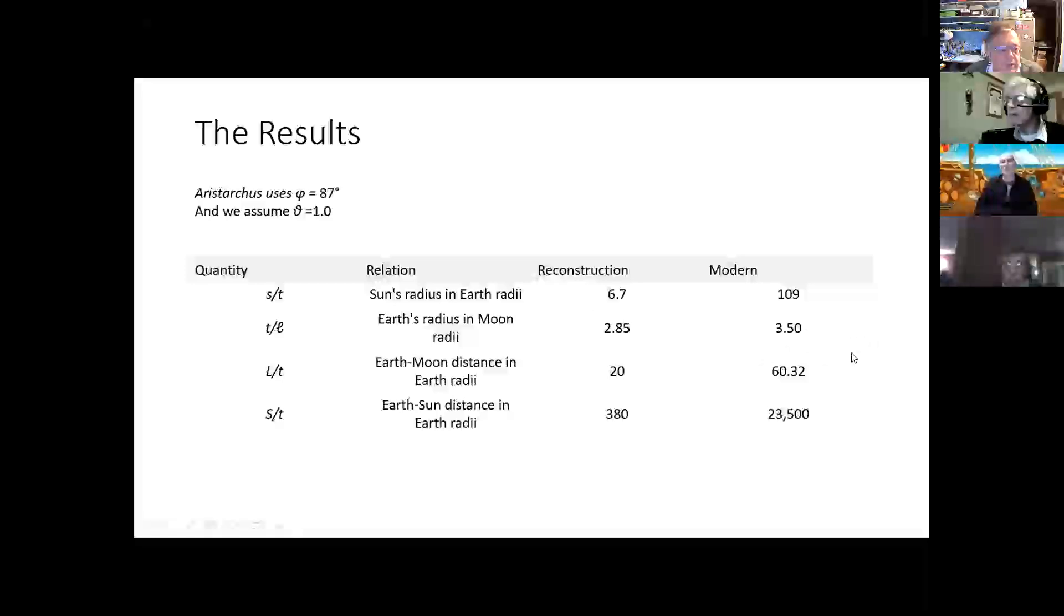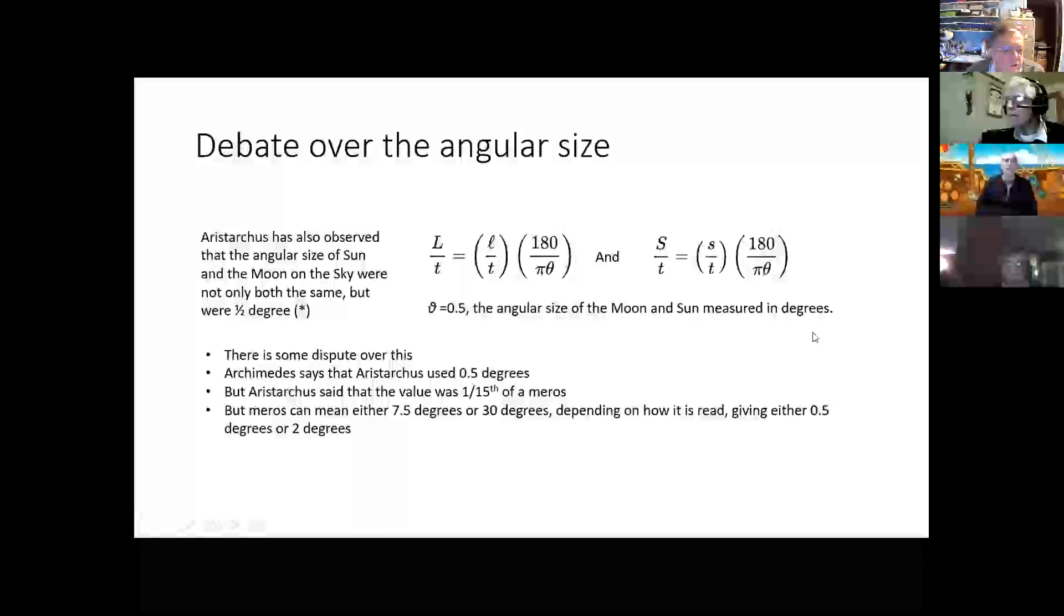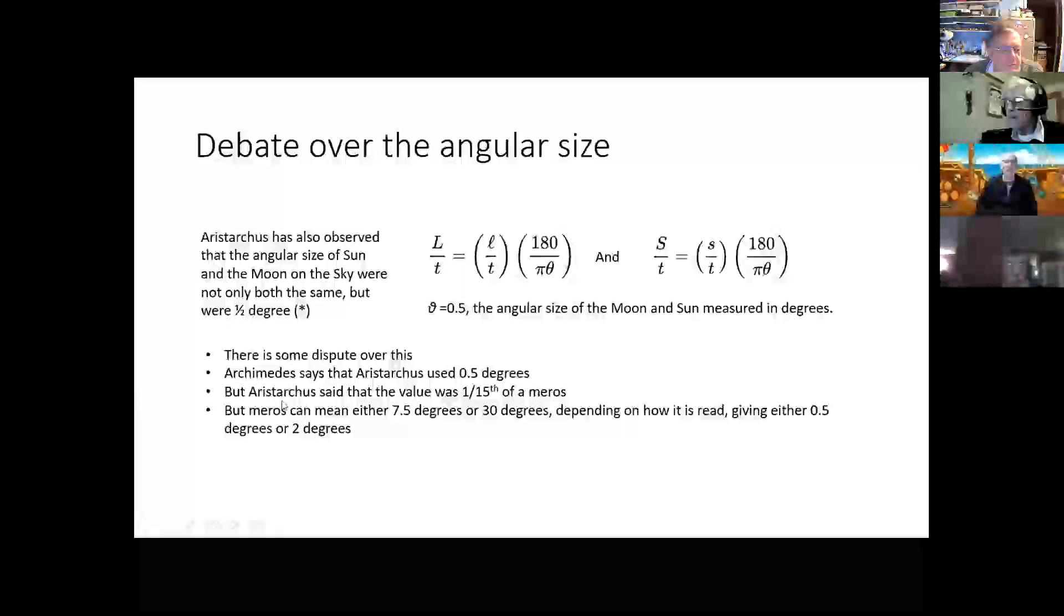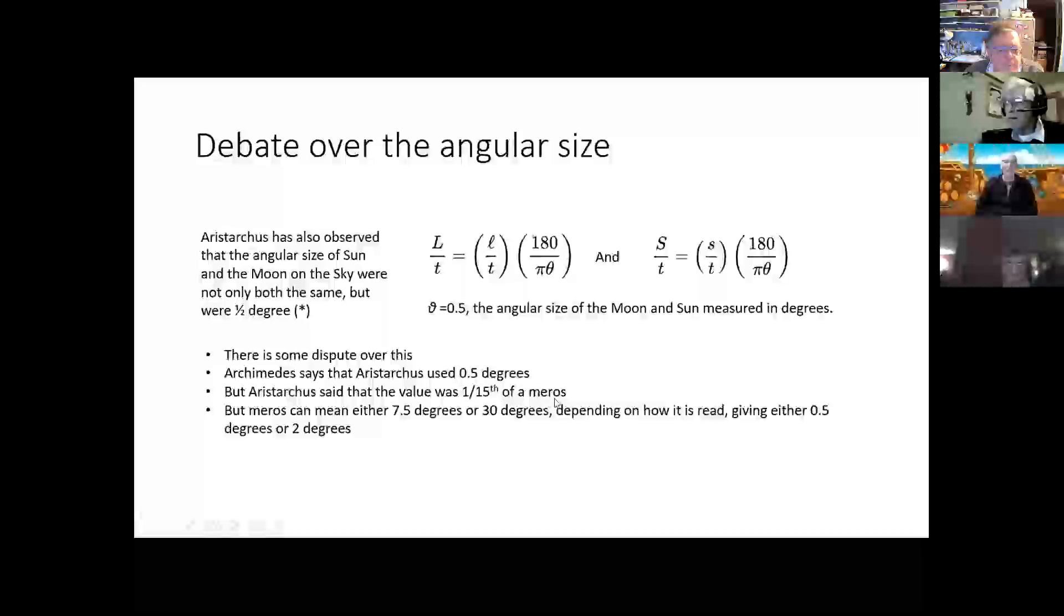Plus, there is some debate about the number he used for the angular size of the Sun and the Moon on the sky. Archimedes says he used 0.5 degrees, but if you use 0.5 degrees, you don't get those answers. And what Aristarchus' writings that we've got say is that it was a 15th of a meros. Unfortunately, there are two meanings of meros. One means 7.5 degrees, and the other one means 30 degrees. Now, the 7.5 degrees one divided by 15 does give you a half-degree size for the Sun and the Moon. The other one gives you a 2-degree size, which is completely different.